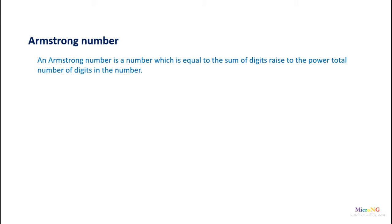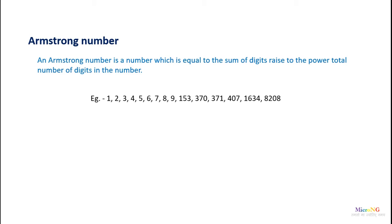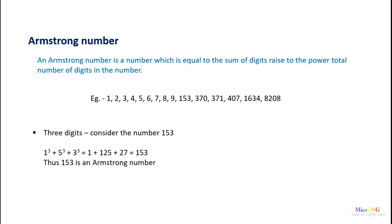This tutorial discusses a C program to find whether a number is an Armstrong number or not. An Armstrong number is a number which is equal to the sum of its digits raised to the power of the total number of digits in the number. Examples include all single digit numbers like 1, 2, 3, 4, 5, 6, 7, 8, 9, and also 153, 370, 371, etc.